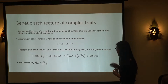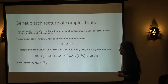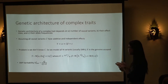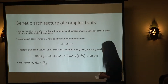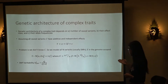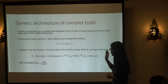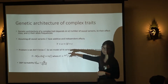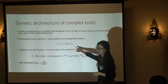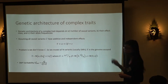The genetic architecture of a complex trait depends on the number of causal variants, their effect sizes, and the allele frequencies. If we knew all of the causal variants and all of them have additive and independent effects on the trait, we can express the trait y as an equation with a constant mean, the sum of all genetic effects at the causal variants, and some environmental factor.